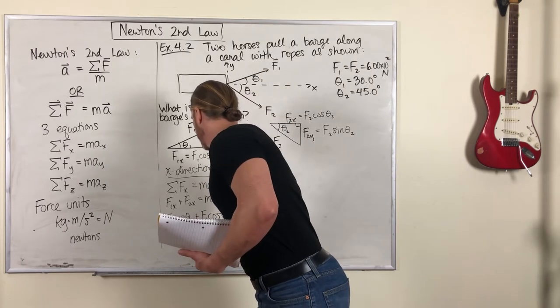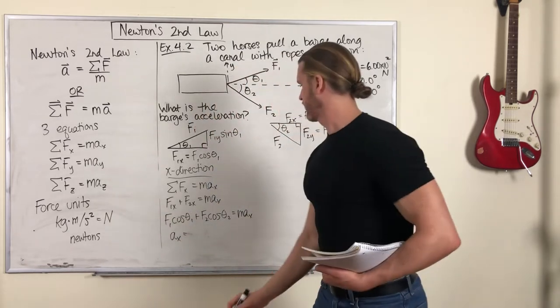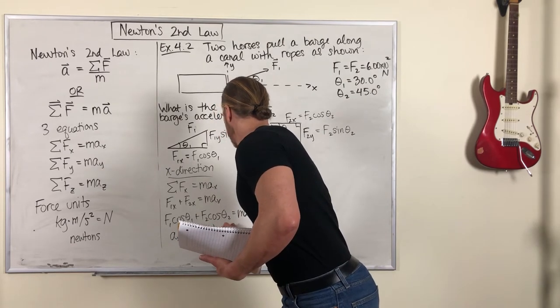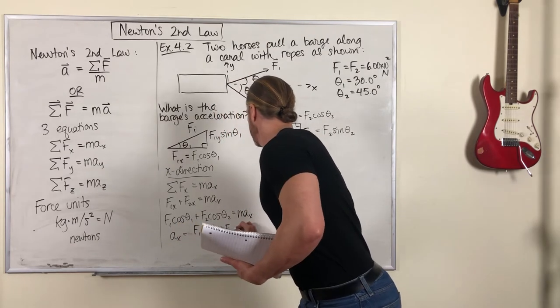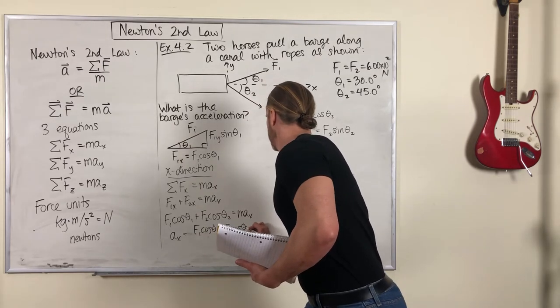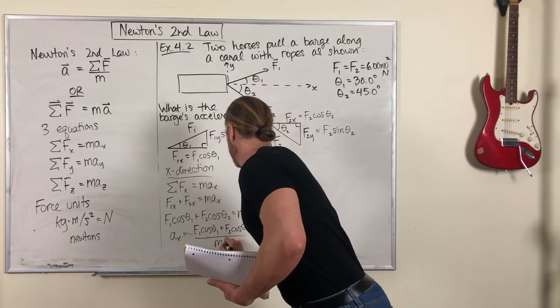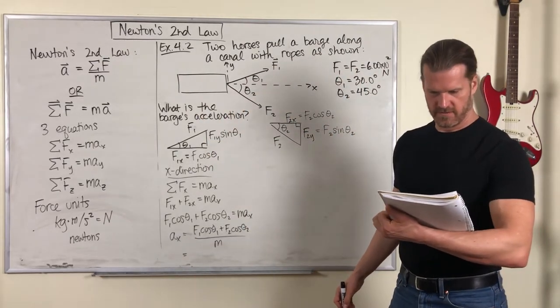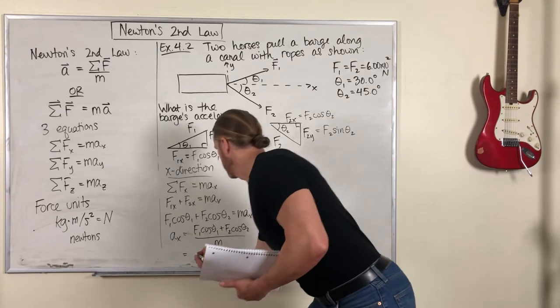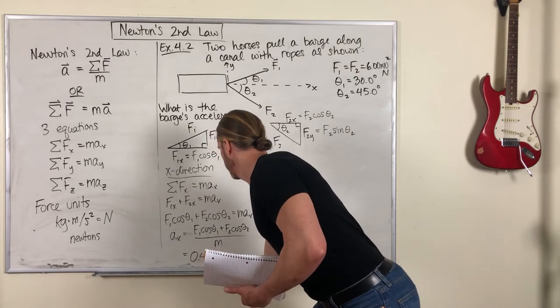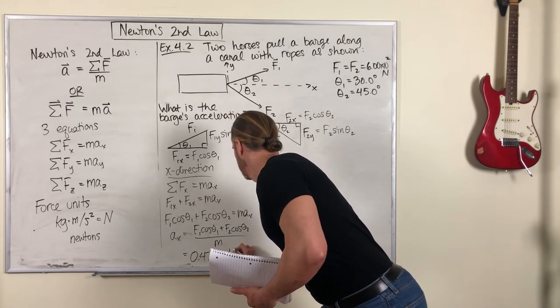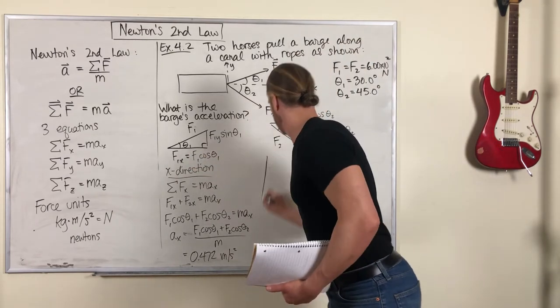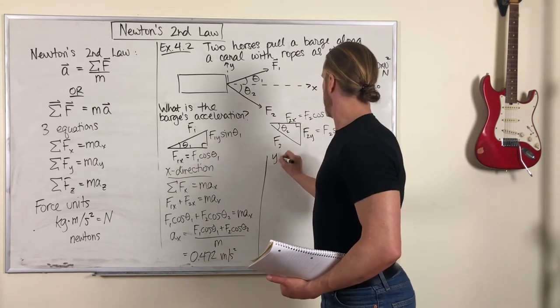So the X component of acceleration is F1 cos theta 1 plus F2 cos theta 2 over M. We plug in all those numbers and it equals 0.472 meters per second squared.